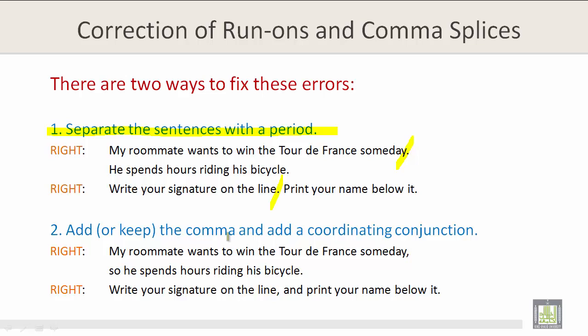Another way to fix this error is to add or keep the comma and add a coordinating conjunction. For example: 'My roommate wants to win the Tour de France someday, so he spends hours riding his bicycle.' Or: 'Write your signature on the line, and print your name below it.'